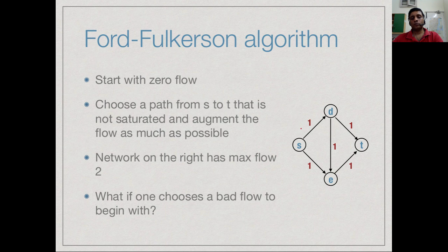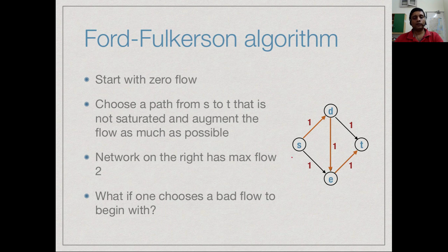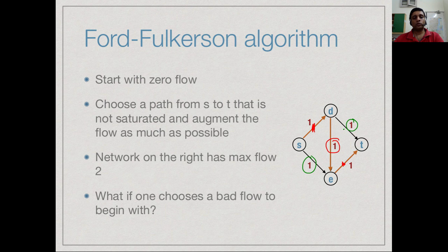In the example network on the right, it is clear a flow of 2 is possible — one unit each along two paths. But Ford-Fulkerson says take any path and start flowing. If you begin with the path s to d to e to t, you flow one unit, saturating those edges. Now the remaining capacity is in the wrong direction, so you cannot generate the second unit of flow. The Ford-Fulkerson algorithm reaches a bottleneck if you choose the wrong path to start with.